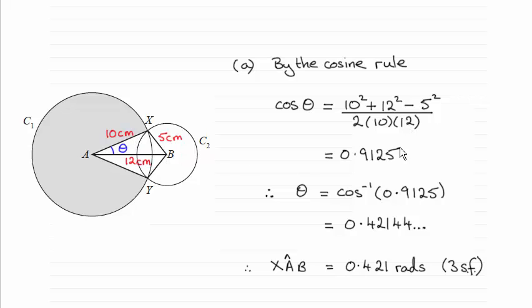So work that out. Make sure your calculator is in radians mode. Take the inverse cosine of 0.9125 and you should find you get the answer. Okay?